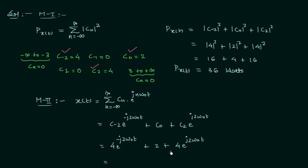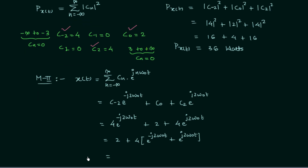Taking four common from the exponential terms: we have two plus four times (e^{−j2ω₀t} + e^{j2ω₀t}), which can be written as two cos(2ω₀t). So x(t) equals two plus four multiplied by two cos(2ω₀t), giving us x(t) = 2 + 8cos(2ω₀t).